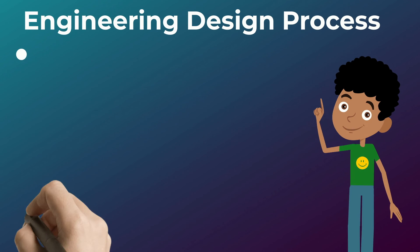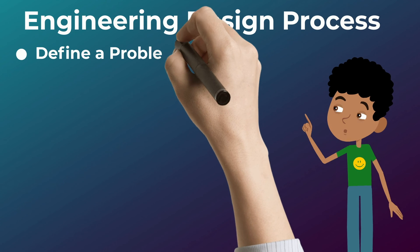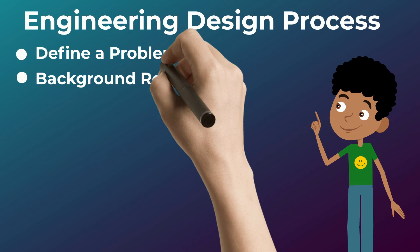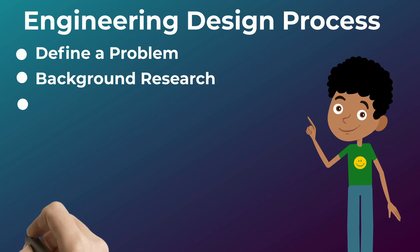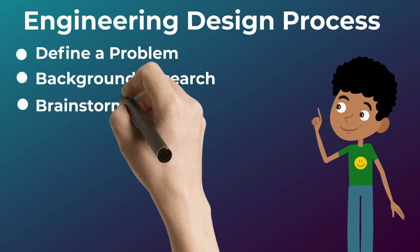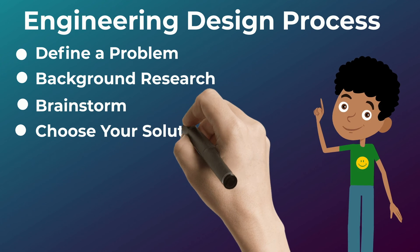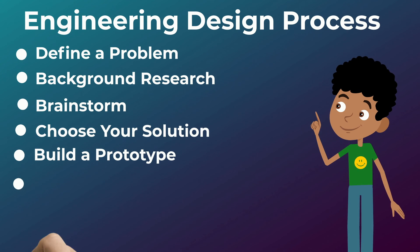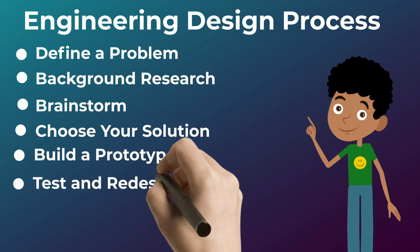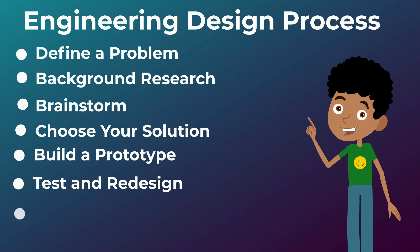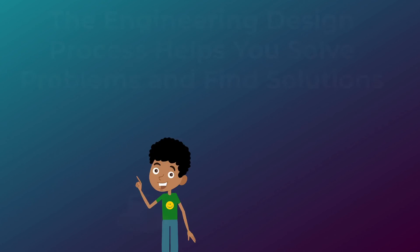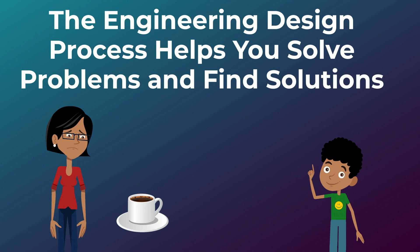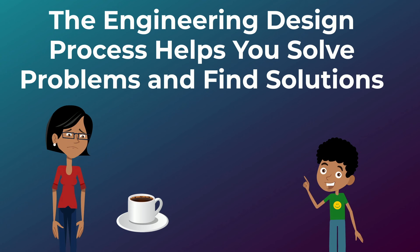The Engineering Design Process: define a problem, do some background research, brainstorm, choose your solution, build a prototype, test and redesign, and communicate your results. The Engineering Design Process helps you solve problems and find solutions.